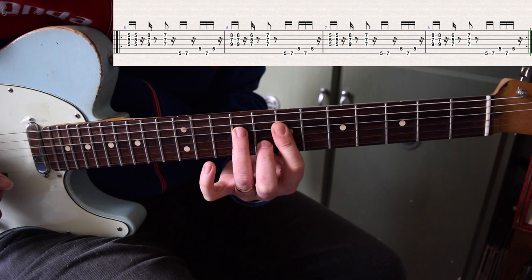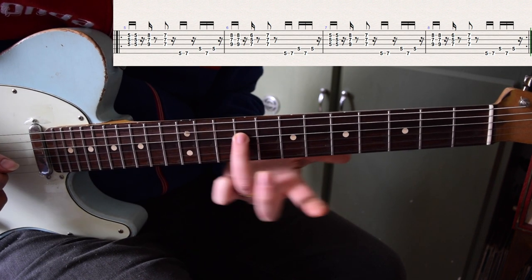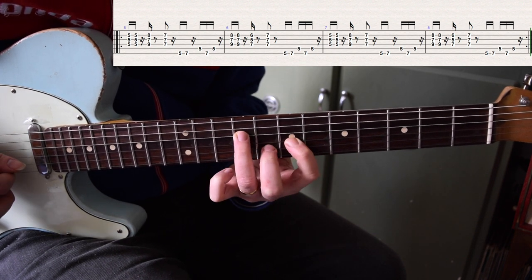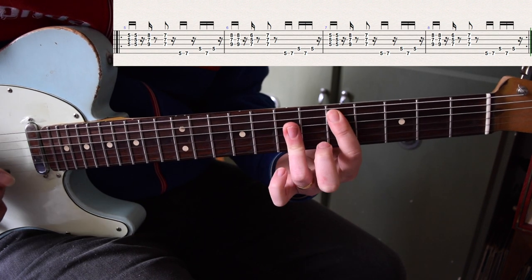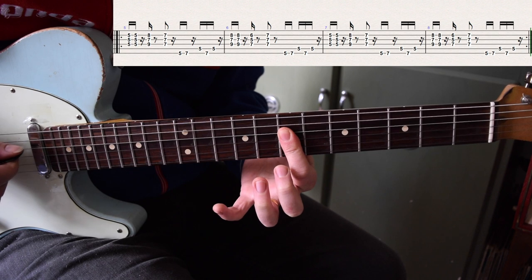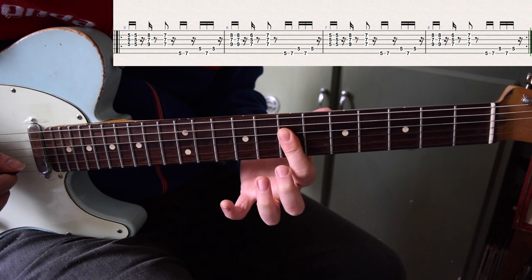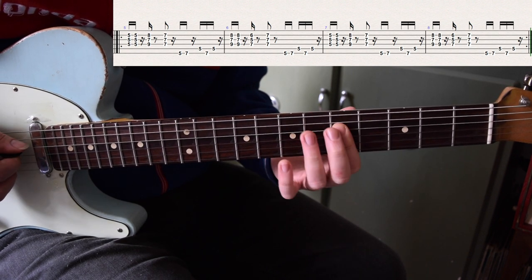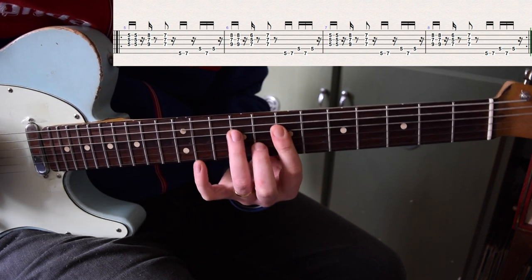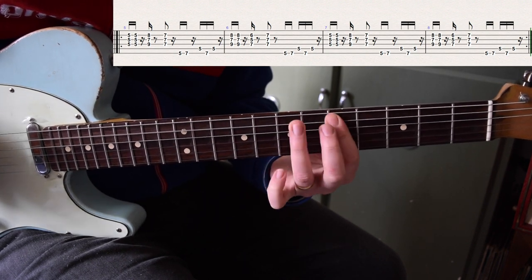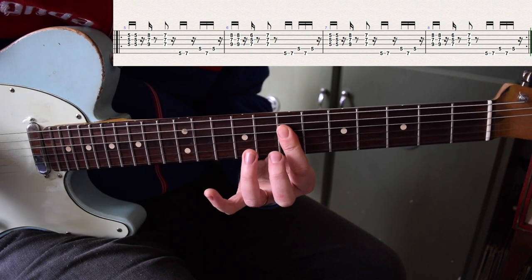This time we go fret five and then we're going to jump up to nine, seven, and eight, and then resolve to the D major across fret seven on the D, G, and B strings.